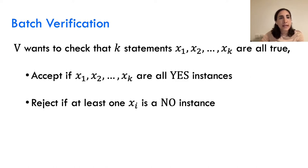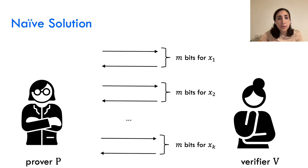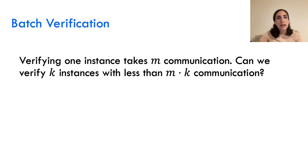Now let's say that the verifier wants to check that k different statements are all true, meaning to accept if all the statements are yes instances and to reject if at least one of the instances is a no instance. The naive solution is to perform the basic protocol k times, one time for each instance. If verifying one instance takes m communication bits, the naive solution would take m times k communication bits. The question is if we can do better.